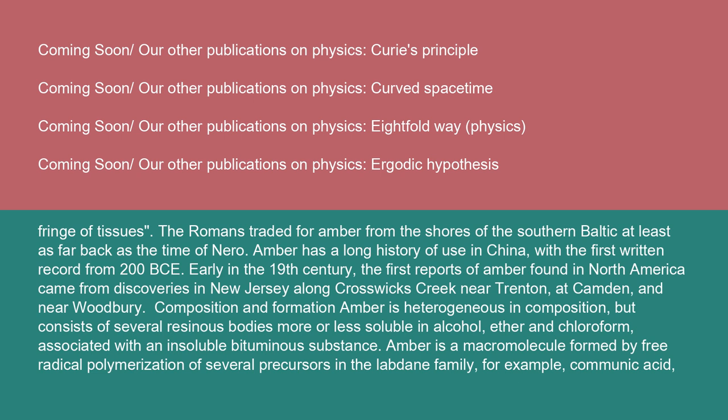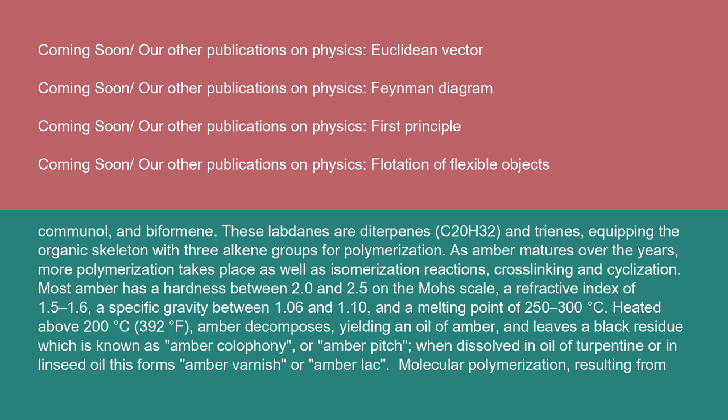Composition and formation: Amber is heterogeneous in composition, but consists of several resinous bodies more or less soluble in alcohol, ether, and chloroform, associated with an insoluble bituminous substance. Amber is a macromolecule formed by free radical polymerization of several precursors in the labdane family — for example, communic acid, communol, and biformene. These labdanes are diterpenes (C20H32) and trienes, equipping the organic skeleton with three alkene groups for polymerization. As amber matures over the years, more polymerization takes place, as well as isomerization reactions, cross-linking, and cyclization.